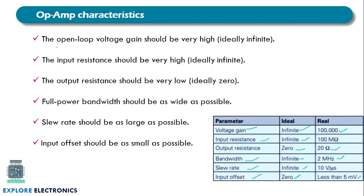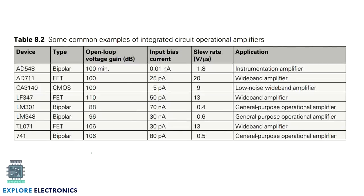To summarize: open loop voltage gain should be very high, input resistance very high, output resistance very low, bandwidth as wide as possible, slew rate as large as possible, and input offset should be minimal. Different op-amp ICs are available — bipolar type, FET type, CMOS type — with various open loop voltage gains. The generally famous and typical one we consider is the 741, which is a general purpose op-amp.